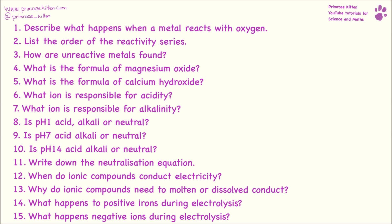Describe what happens when a metal reacts with oxygen. You are going to get a metal oxide forming and generally you're going to see a change happen. For example, when sodium reacts with oxygen it becomes dull and not very shiny, whereas when magnesium reacts with oxygen it goes from a shiny metal to a white powder. So you're going to see a change in appearance.